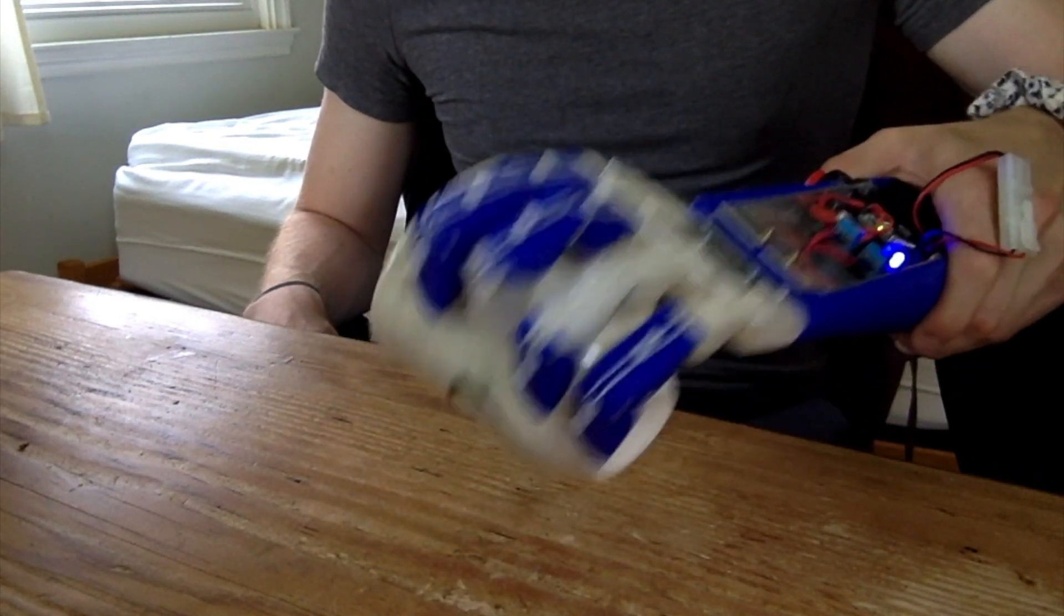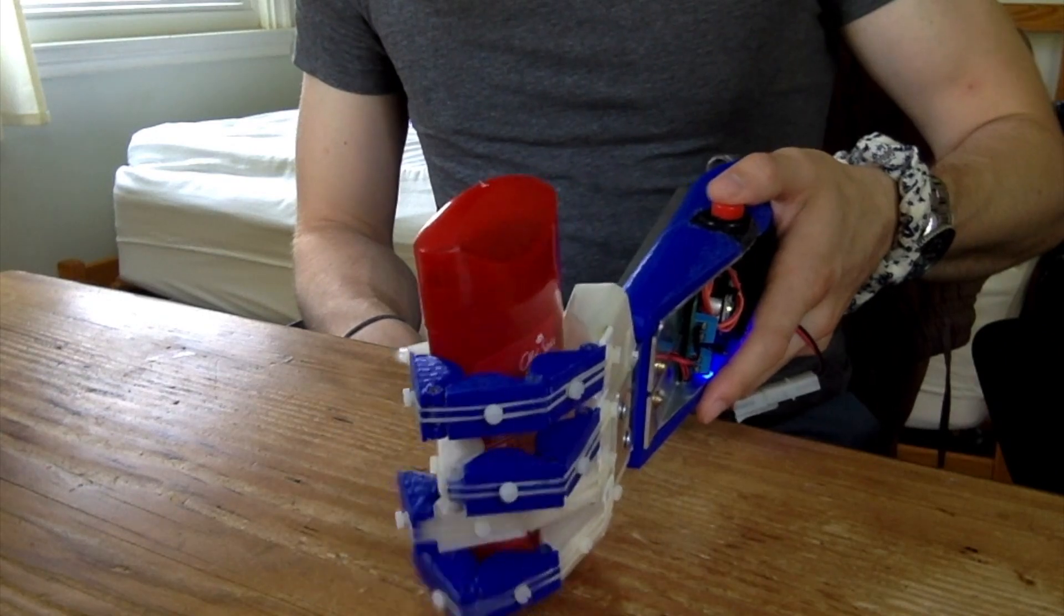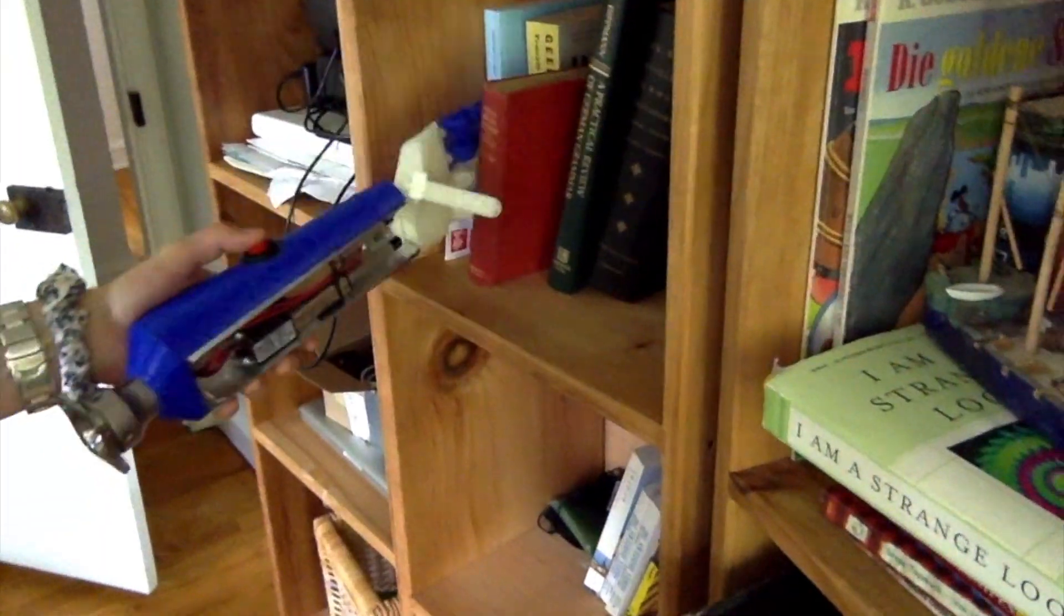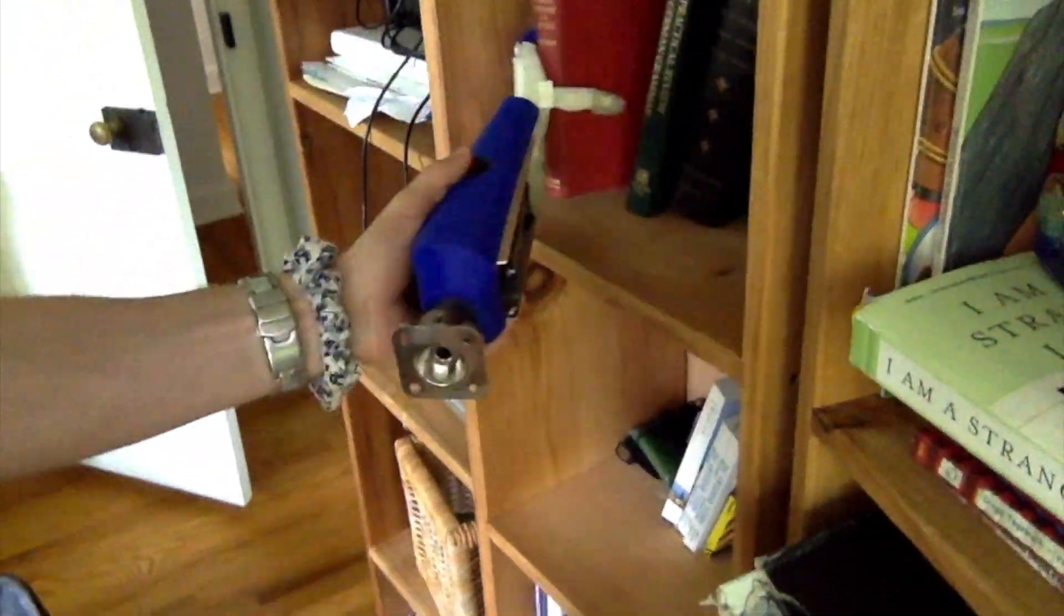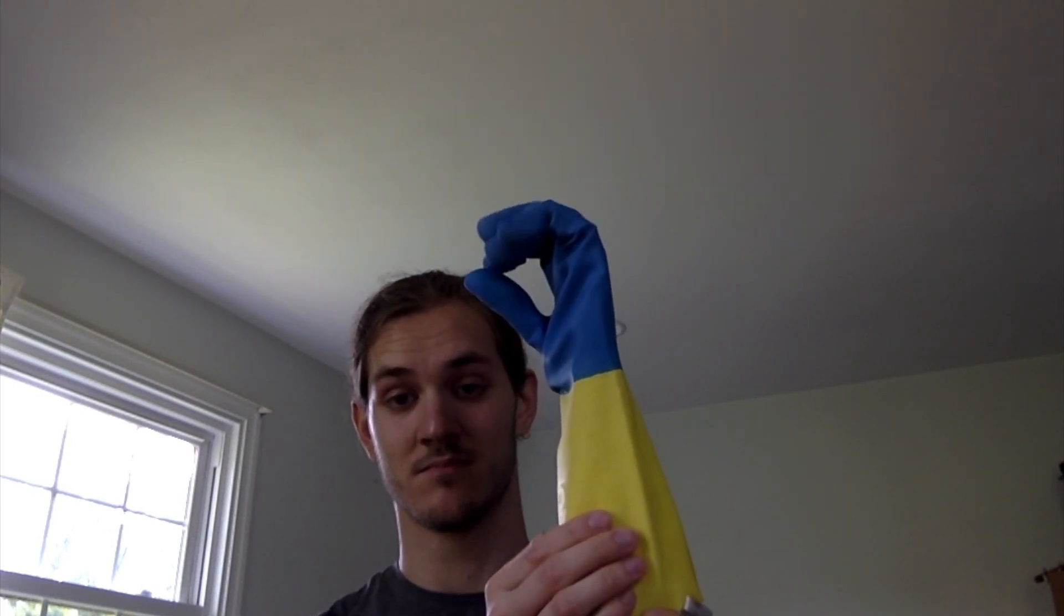As is, the hand can pick up and interact with a slew of household objects. However, the hand has a fairly low coefficient of friction, so heavy objects slip. Just like in the previous video, I'll use a rubber glove to increase the friction substantially.